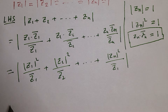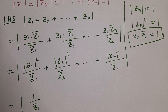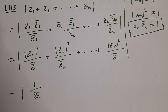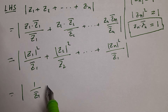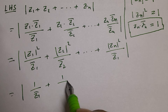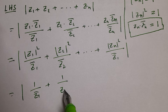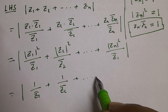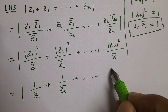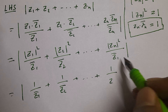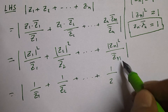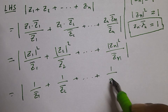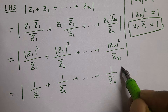This equals 1/z̄₁ + 1/z̄₂ + ... + 1/z̄ₙ, since each |zₖ|² = 1.